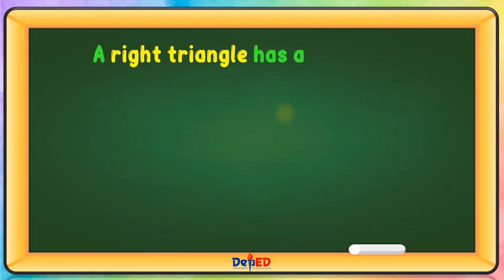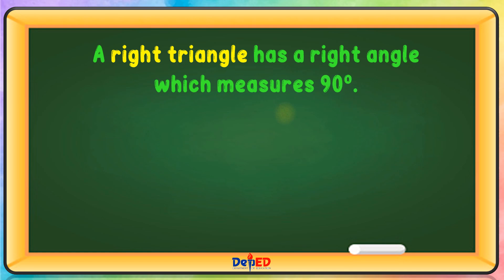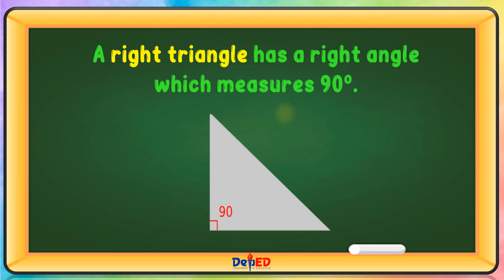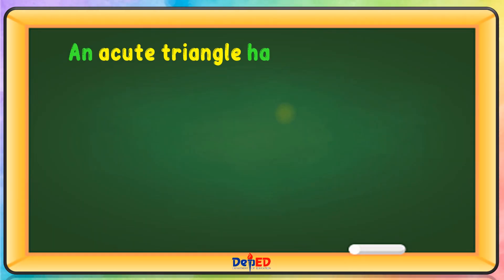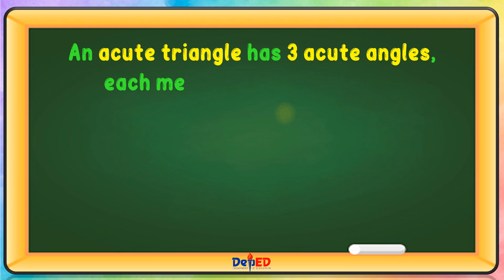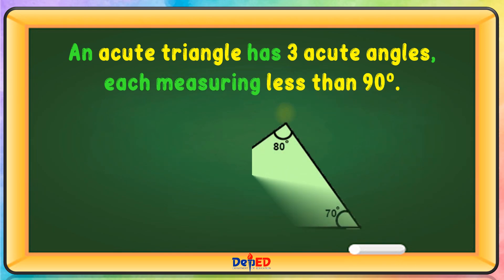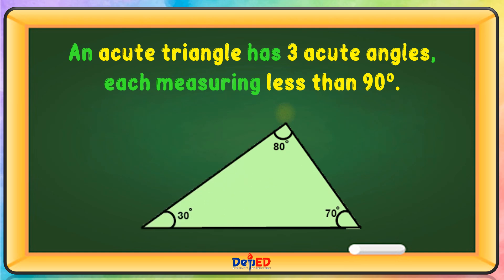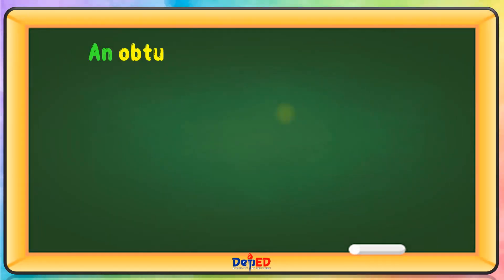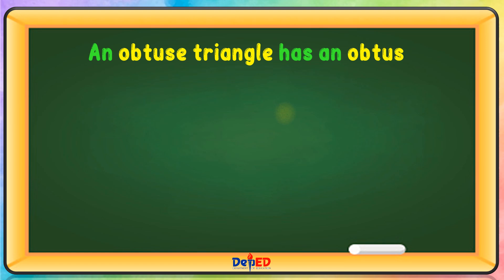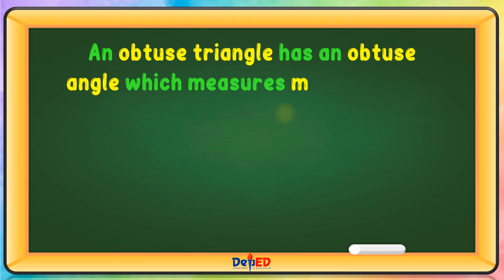A right triangle has a right angle which measures 90 degrees. An acute triangle has three acute angles, each measuring less than 90 degrees. An obtuse triangle has an obtuse angle which measures more than 90 degrees.